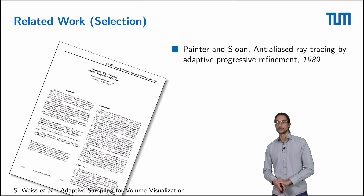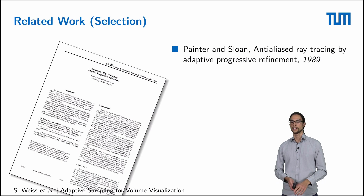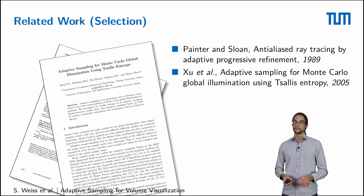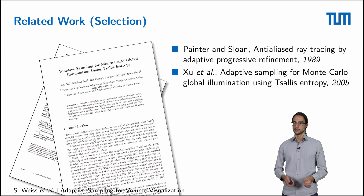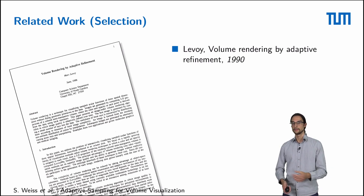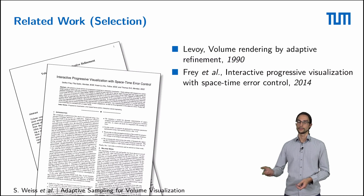Adaptive sampling is a very old topic in rendering. For example, Painter and Sloan presented an adaptive refinement scheme for ray tracing in 1989. Chou et al. presented a method via the colorist entropy to estimate where more samples might be needed in 2005. Specifically tailored to volume rendering, Lee-Voy presented an adaptive refinement scheme for volume rendering in 1990, and Fright et al. presented a progressive refinement scheme for direct volume rendering in 2014.